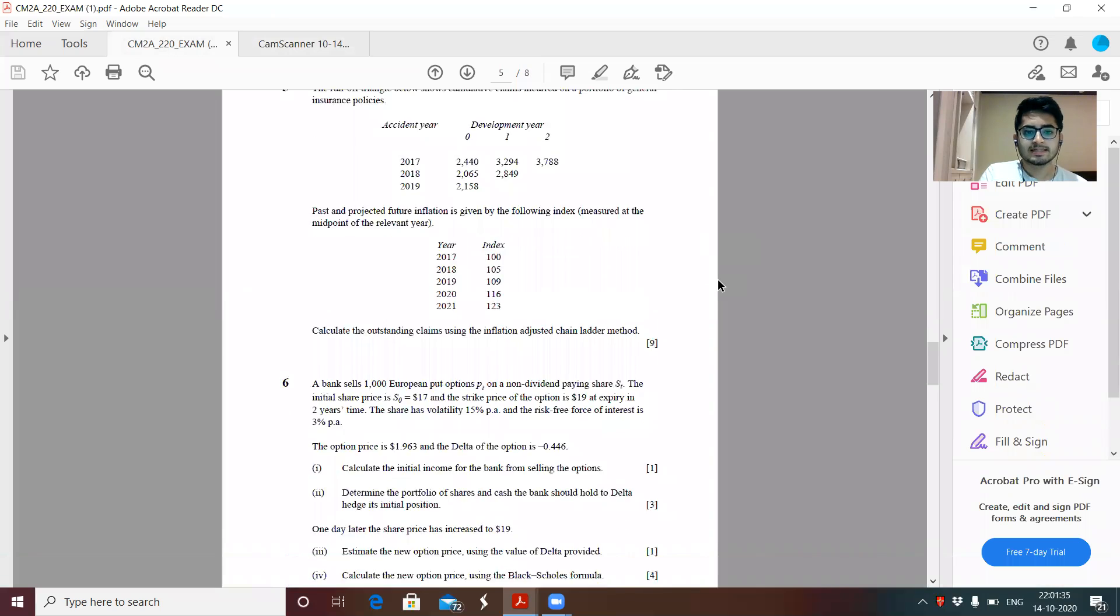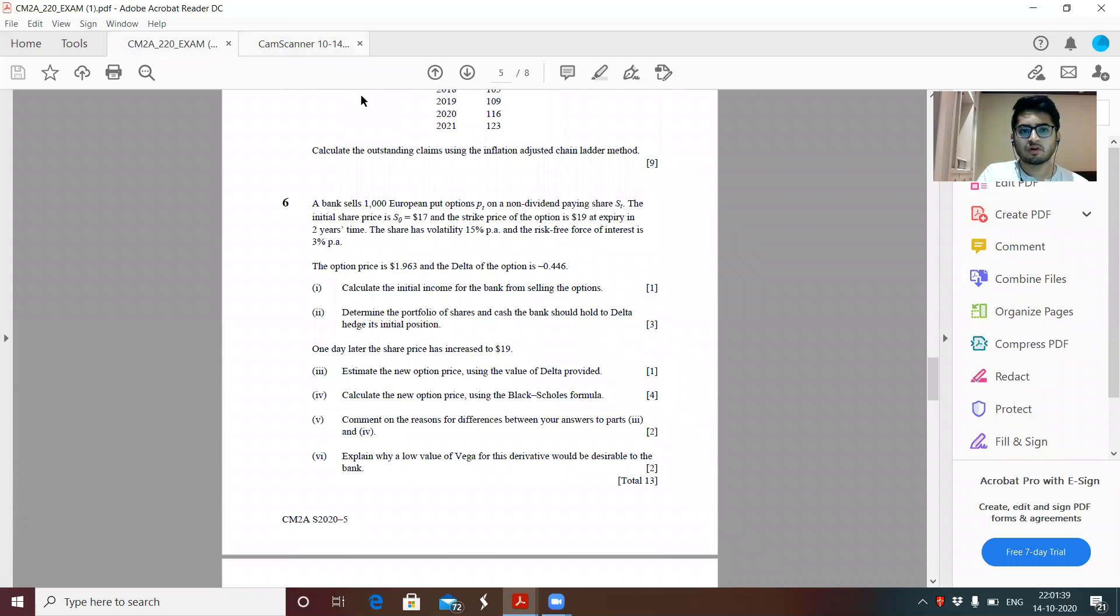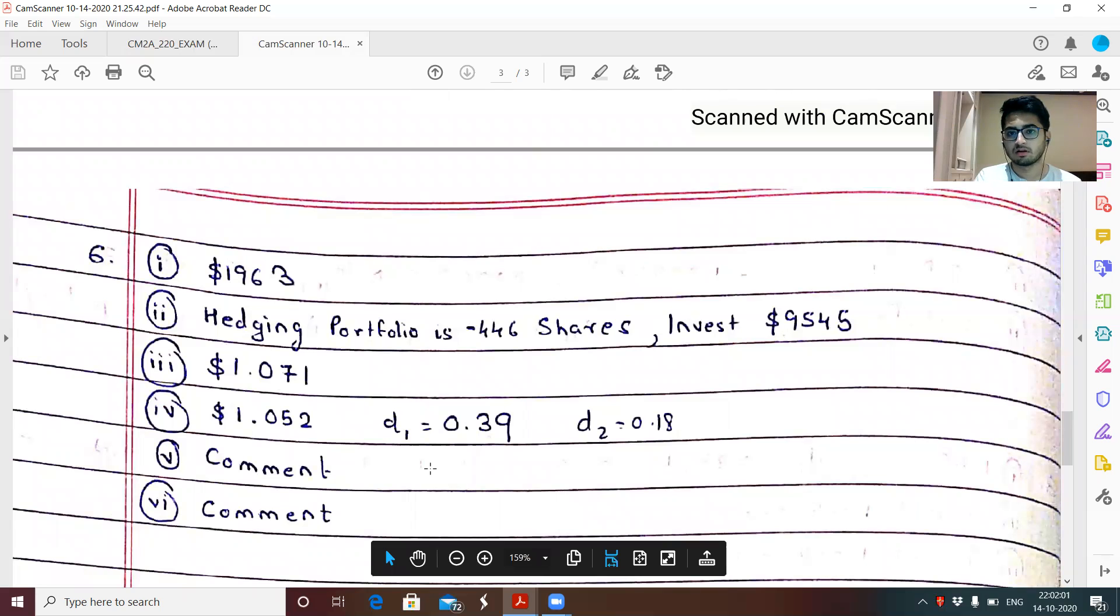Question six. Again, a straightforward question. Part one, 0.196. Part three hedging portfolio that is opposite of replicating. We'll have minus 0.446 shares and invest 9545. Part three, 1.071. This is the part four. I have used these values of D one and D two. Part five and six are nothing but comment based.